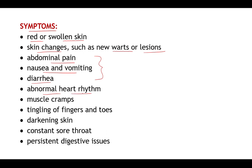Abnormal heart rhythm may occur — heart rates may change and contractile properties may get altered. Muscle cramps may be seen, along with tingling of the fingers and toes specifically. Itching or scratching may be seen. Darkening of the skin may also occur, or constant sore throat and persistent digestive issues.